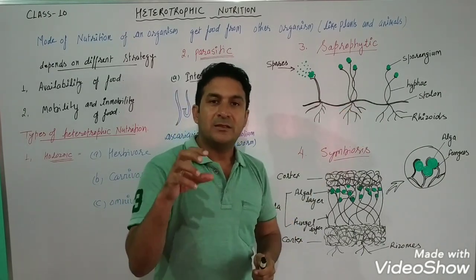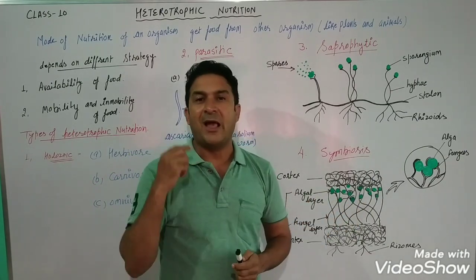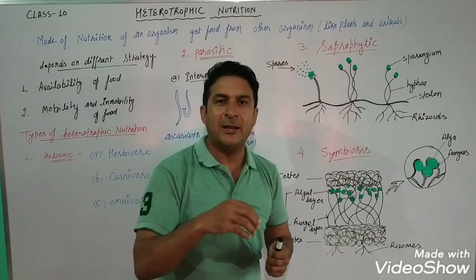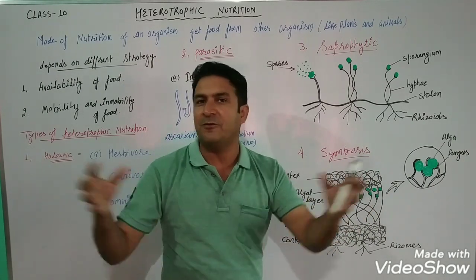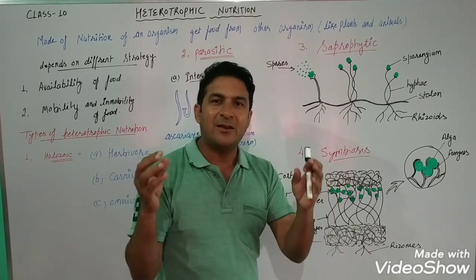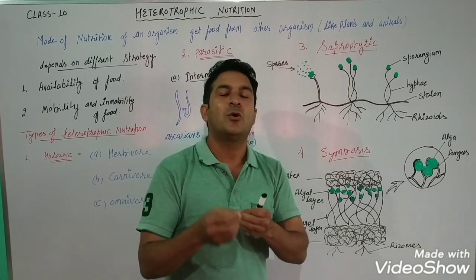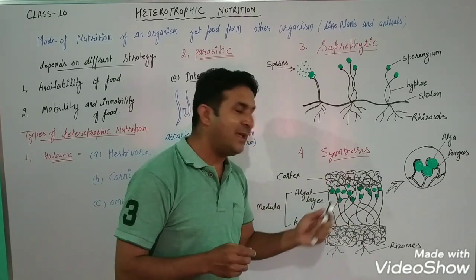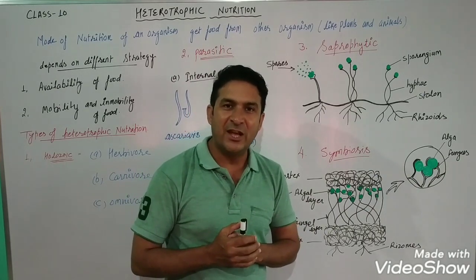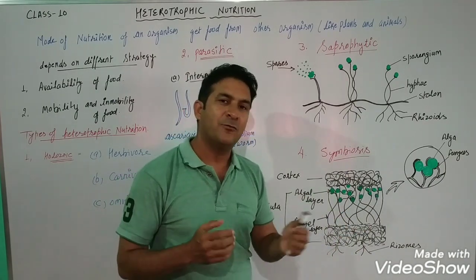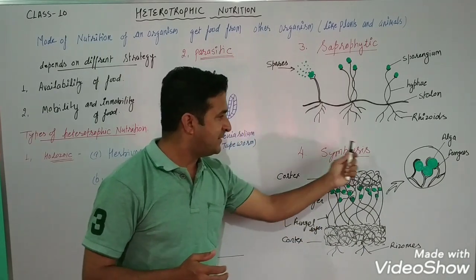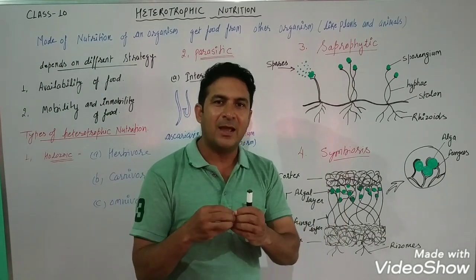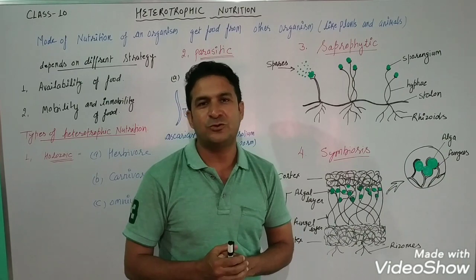Here you can see the association of algae and fungi — two different species living together and providing benefit to each other. Fungi have great power of absorption, while algae are autotrophic and can synthesize their own food. The fungi provide raw material to the algae, and the algae synthesize food in the presence of sunlight. In return, the algae provide food to the fungi, and the fungi provide shelter and raw material to the algae. This is symbiosis: when two different species come together and provide benefit to each other.